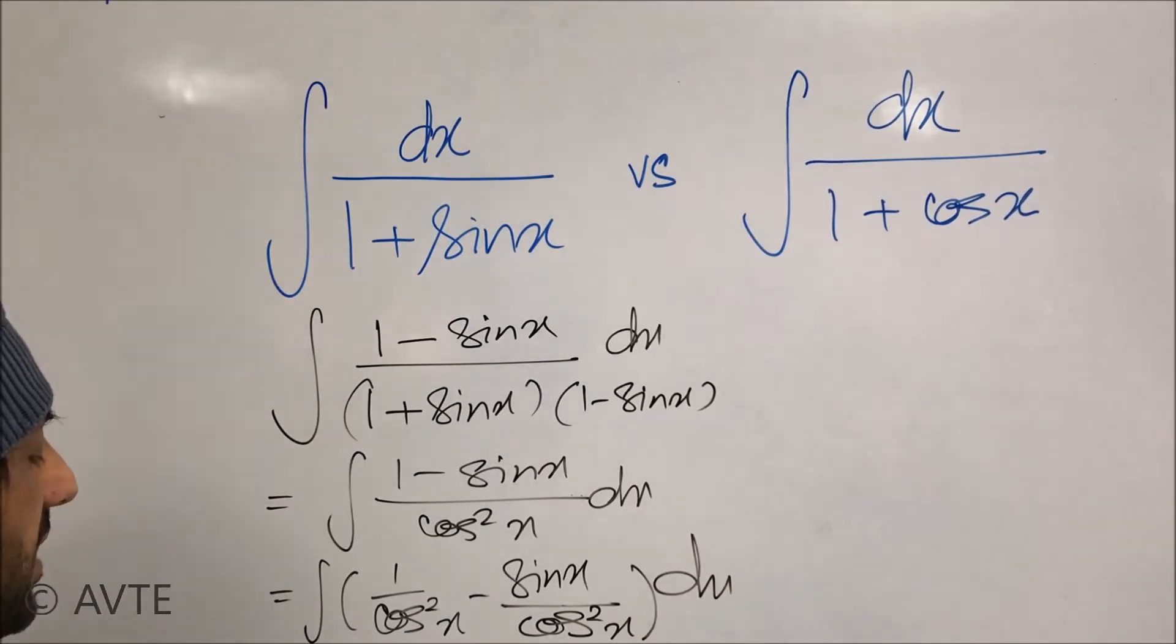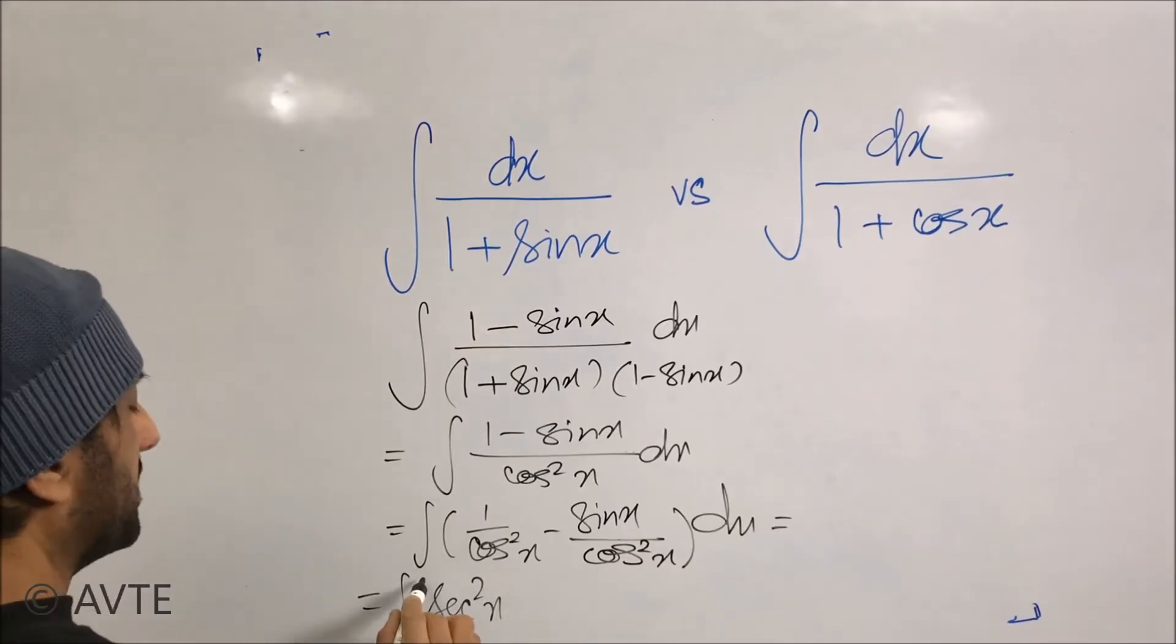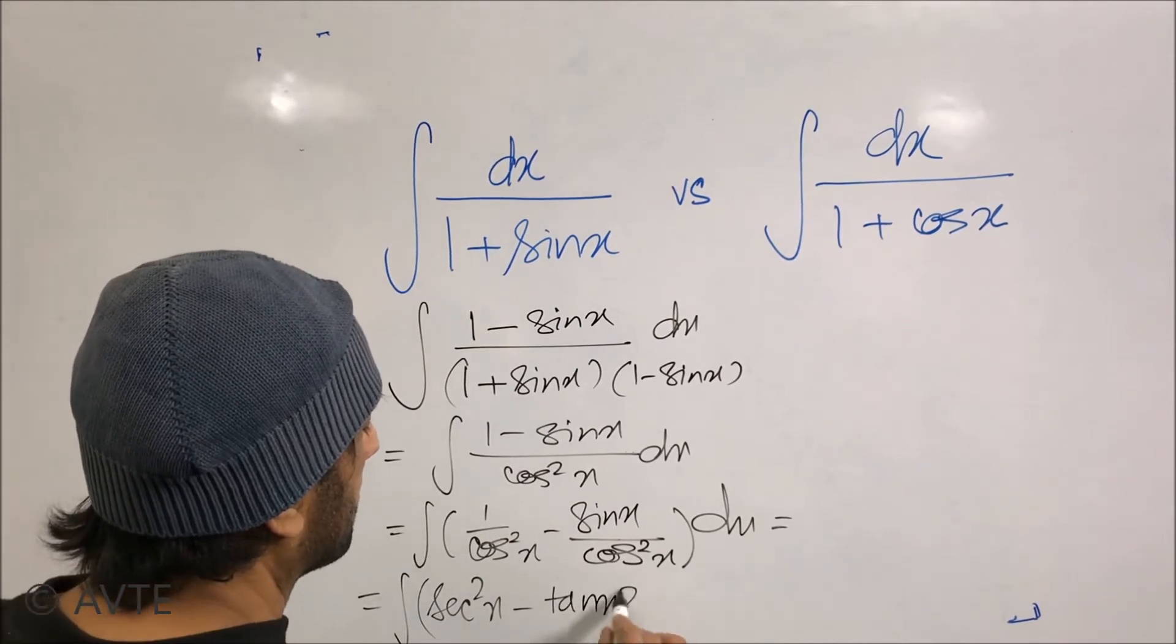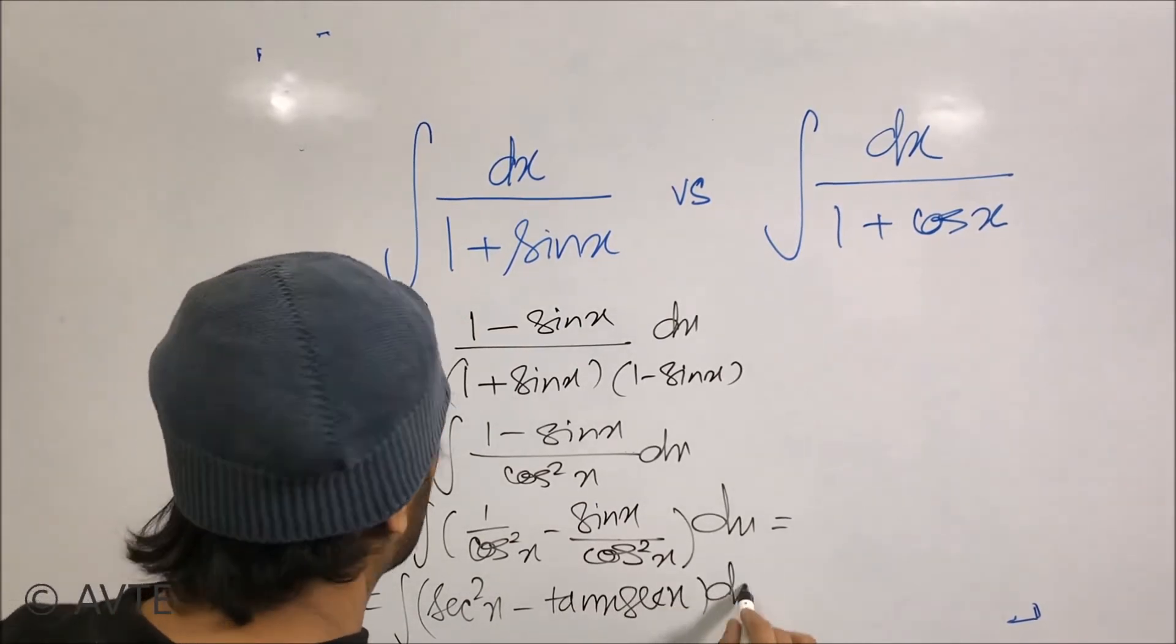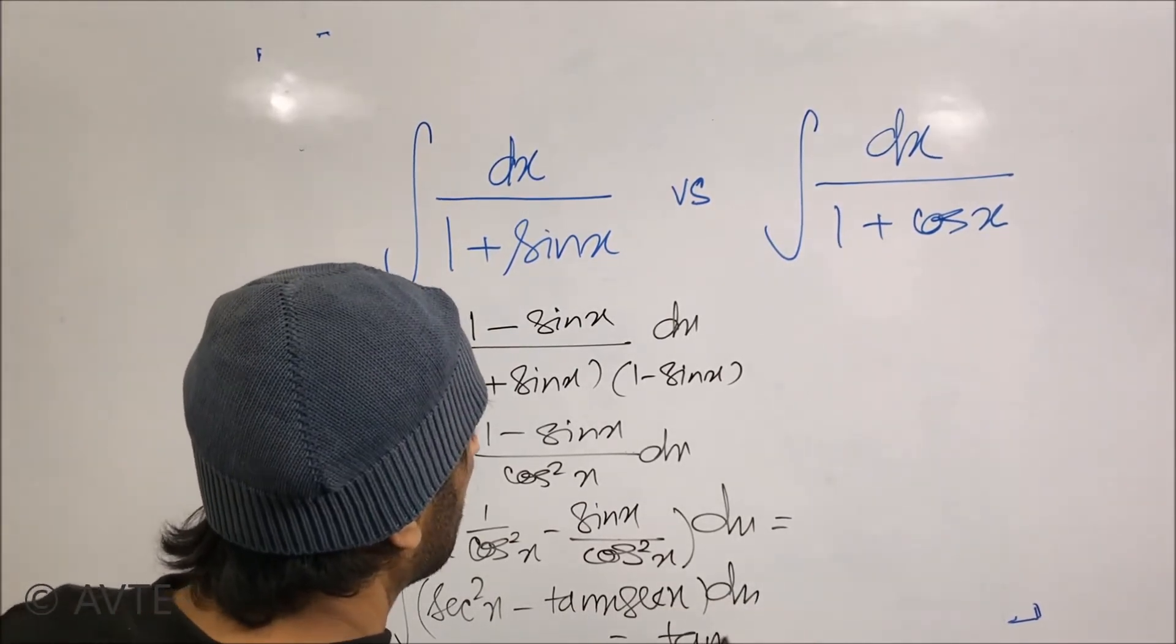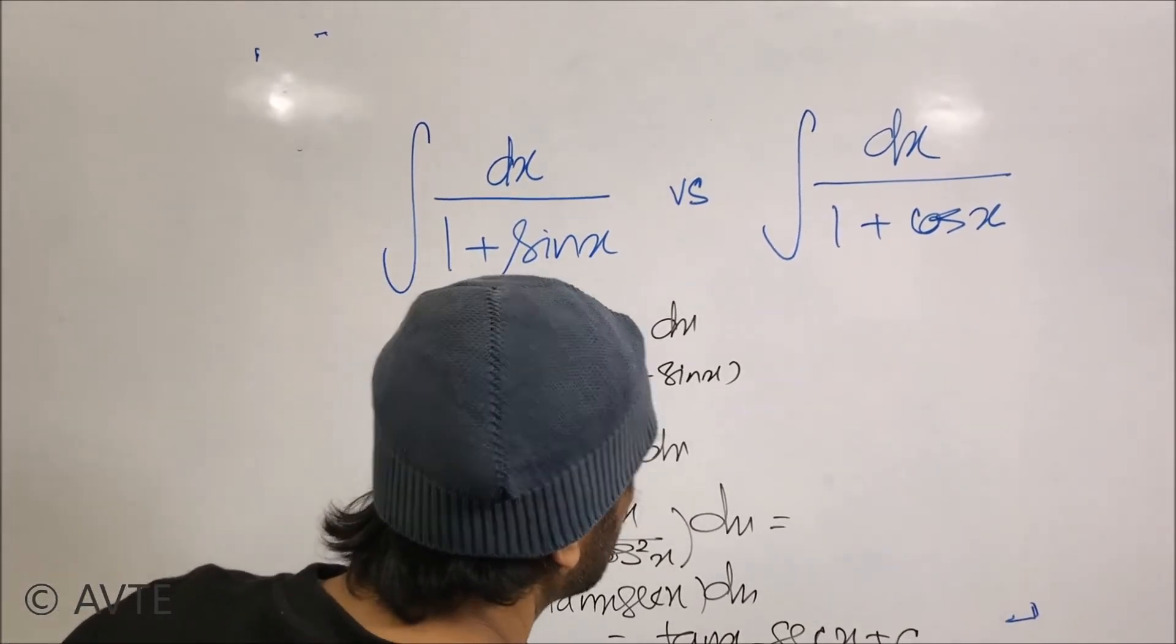And can easily do the integration. So it is the integration of sec²x - tan x sec x, and hence the answer is tan x - sec x plus the constant.